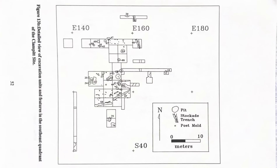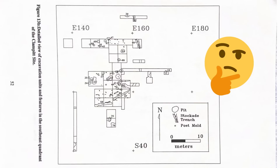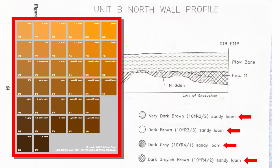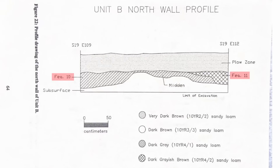Since the Clampett site is a single occupation site, the map is fairly straightforward. However, when a site spans multiple levels, this can get more complicated, with several plans for the same units. Let's move on to soil profiles. This is the profile of Unit B in Figure 22. Notice how each layer correlates with a Munsell color. Two features, Feature 10 and Feature 11, sit on dark brown subsoil. Many of these features were middens containing charcoal.